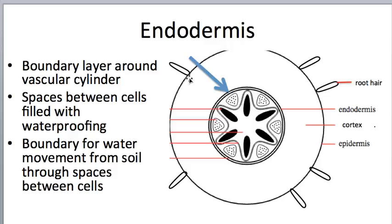There are pathways for water to move through the cortex, but the situation is different when we reach the outer black ring — the endodermis. This is the boundary layer around the vascular cylinder. Unlike the cells in the cortex, for the endodermis the space between the cells is filled with a waterproofing material — a waxy-like material that prevents water, and therefore minerals dissolved in water, from moving from the cortex into the cylinder or conversely from the cylinder back into the cortex. This gives the plant control over what gets to move into the vasculature and hence gets brought up to the leaves.